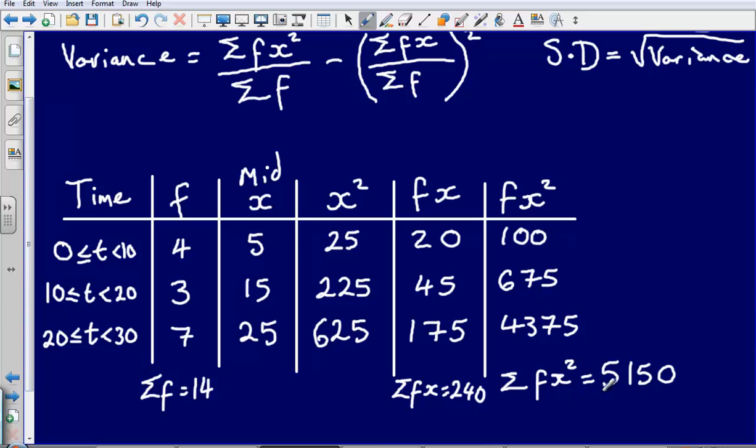Now let's just input all of this information into this formula here. So I'm going to take this part here, 5,150. So the sum of fx squared, I'm going to divide that by the sum of the frequency, 14. Then I'm going to take away the sum of fx, 240, divided by the sum of the frequency, 14. And it tells me that I need to square this.